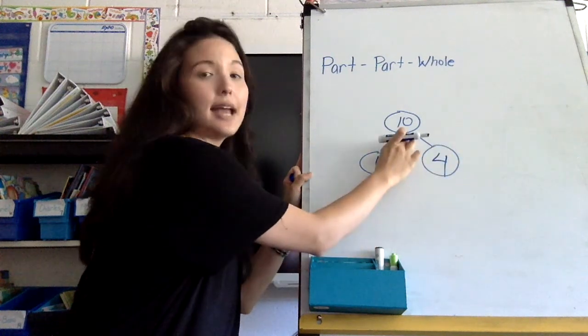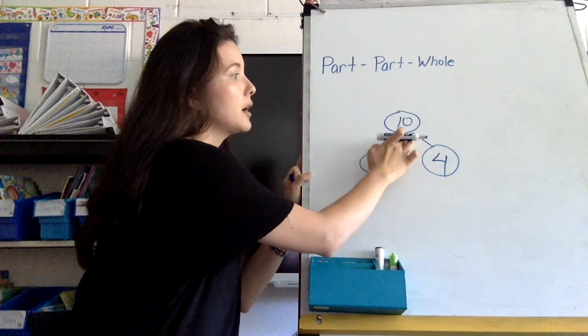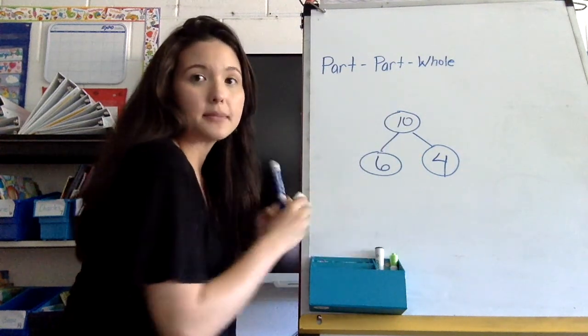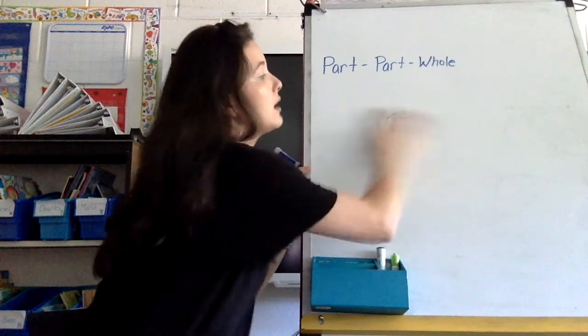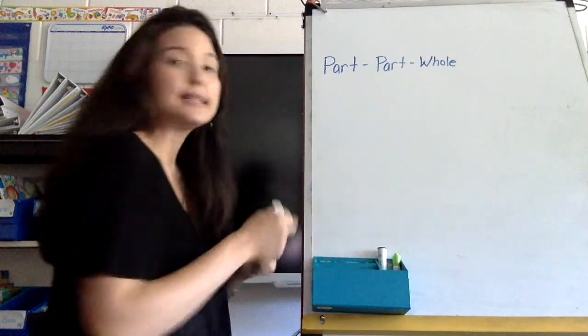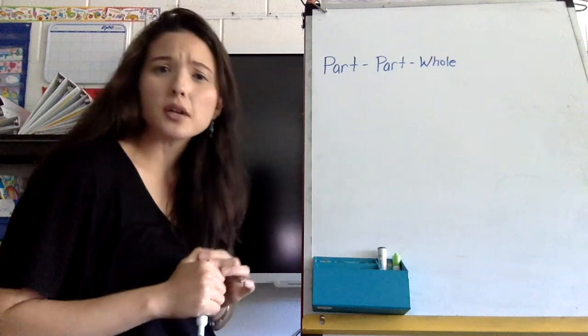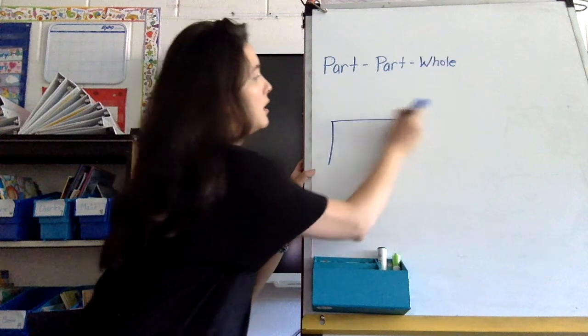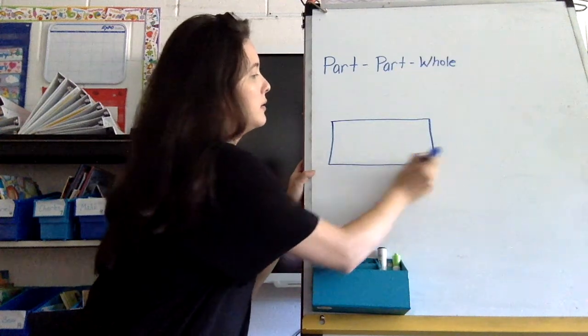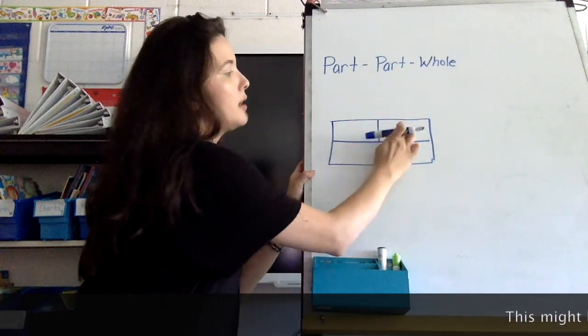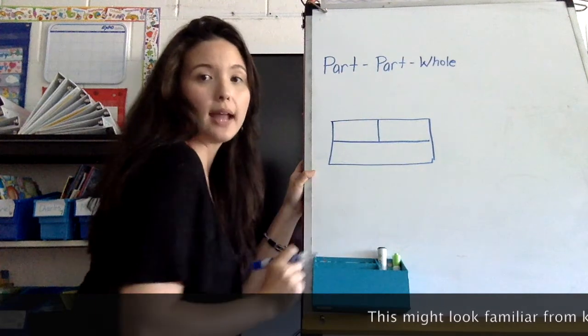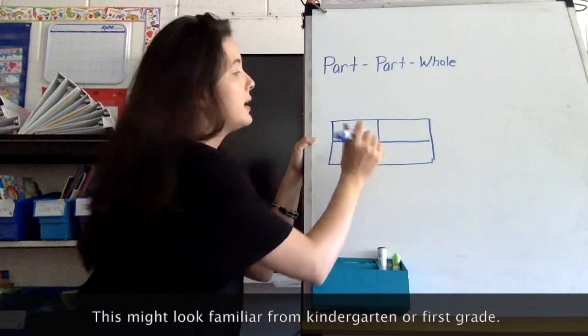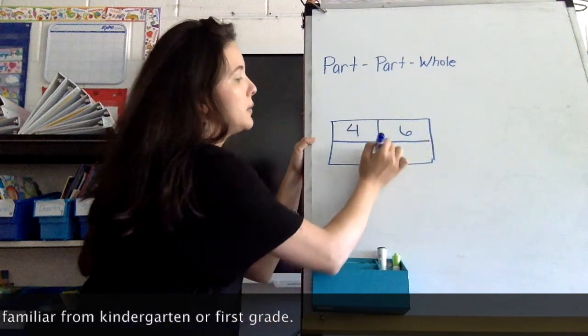We would do 10 as our whole, and if 6 was one of our parts, the other part would have been 4, because 6 and 4 made 10, or 6 plus 4 equals 10. We're going to be taking the same concept and we're going to do the same thing in second grade, except instead of drawing circles we're going to draw a big rectangle and have our part-part-whole.